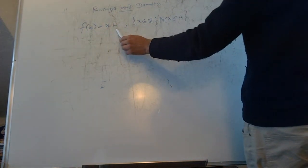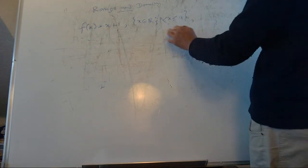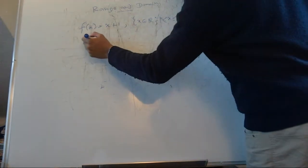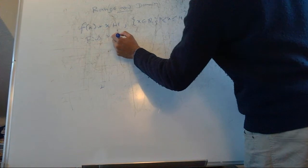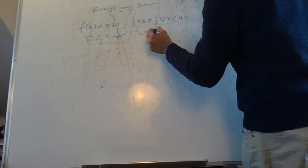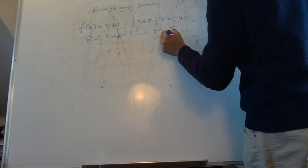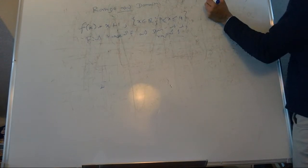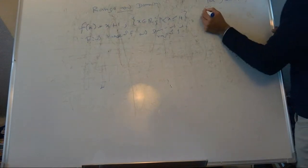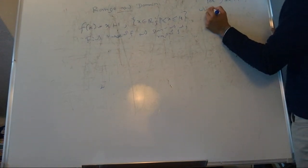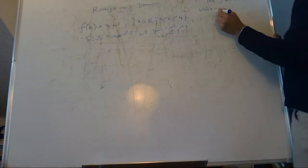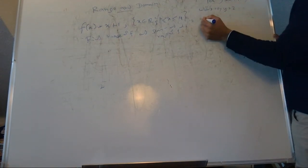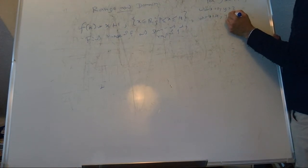This function is x plus 1 but only between x equals 1 and x equals 4. The question is: find the range of f, and the domain and range of f inverse. If we sketch y equals x plus 1 — when x equals 1, y equals 2; when x equals 4, y equals 5.